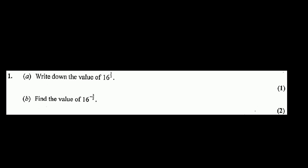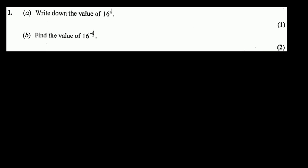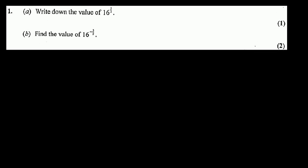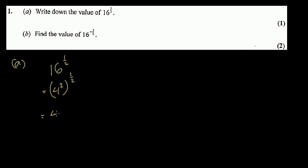The first question is an indices question. We need to write down the value of 16 to the power half. We write 16 to the power half as 4 squared to the power half. The rule of indices is: if you have a power over a power, the powers are multiplied. So it would be 4 to the power 2 multiplied by half, the 2s cancel, so the answer is 4.